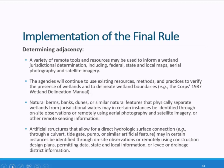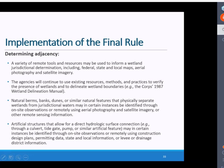The agencies will also continue to use existing resources, methods, and practices to verify the presence of wetlands and delineate wetland boundaries. For example, the agencies will continue to use the Corps' 1987 Wetland Delineation Manual as well as other applicable resources. These same tools may be used to inform a wetland jurisdictional determination as to whether they are adjacent. One of the ways a wetland may be jurisdictional under the final rule is if it is physically separated from a paragraph A1-to-3 water only by a natural berm, bank, dune, or similar natural feature.